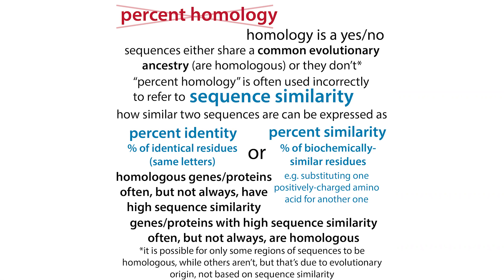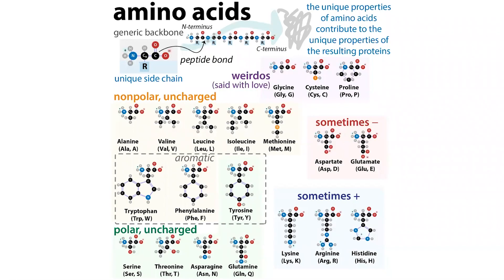We can't use the term percent homology to describe how similar two sequences are, but we can use a couple of different terms: percent identity or percent similarity. Percent identity is the percentage of identical residues — the same nucleotide letters in DNA or RNA, or the same amino acid letters in a protein. Percent similarity is the percentage of residues that are similar but not identical — for example, substituting one negatively charged amino acid for another negatively charged amino acid would be considered similar, whereas changing a negatively charged amino acid for a positively charged one would not be similar.